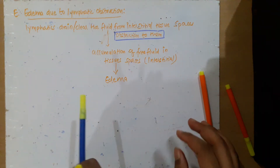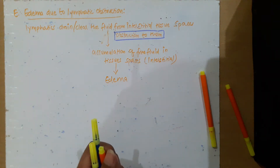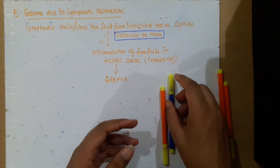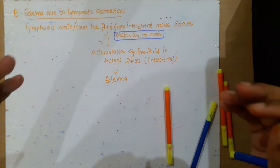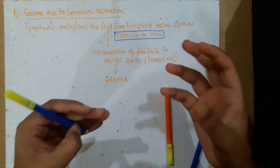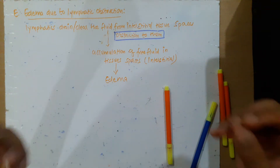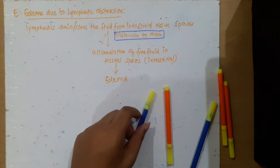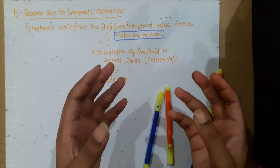Now, what causes obstruction of the lymphatics? There are various reasons. First is surgery — during radical mastectomy, removal of the axillary lymph nodes may cause edema of the superior extremity.